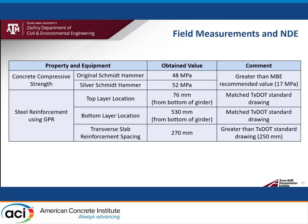While on site, we confirmed the bridge member dimensions and performed non-destructive evaluation to determine in-situ material properties. The concrete compressive strength was taken to be 48 MPa, which was greater than the MBE recommended value. Using GPR, the location of steel reinforcement was confirmed to match the TxDOT standard drawing. However, the spacing of the transverse slab reinforcement was greater than that specified in the standard drawing.